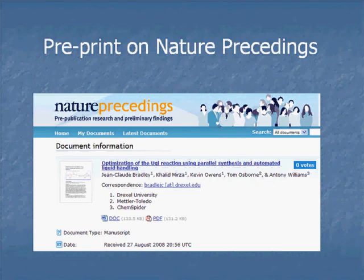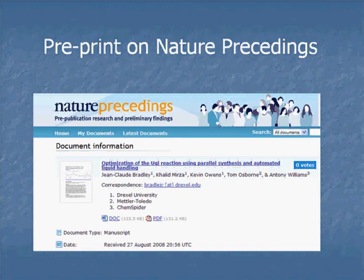There are so many tools now that make communicating your science faster without losing anything. Another thing that physicists have been using for a while is preprint servers. Chemistry really didn't have a good preprint server that's still working, but Nature recently came up with Nature Precedings, which is a preprint server backed by the editorial filter of the Nature Publishing Group — one of the most well-respected publishers out there. Before publication in JoVE or any peer-reviewed journal, we can link to this document. People can comment on it, vote on it, give feedback, and you can have versioning. Normally when you have a paper coming out you just tell people to wait — here, you can give a link right away and have your cake and eat it too.